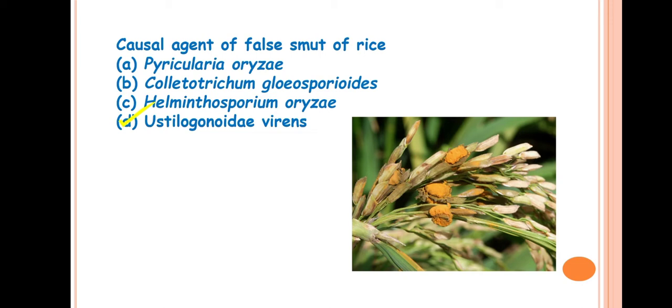Let's discuss the symptom of false smut of rice. Here, the individual grain will transform into a mass of yellow fruiting bodies or velvety spores. Here you can see the yellow fruiting bodies are there in the place of the grains. Few grains in a panicle are usually impacted by this fungus. Rest of the grains are in normal condition. Generally, false smut of rice occurs when the moisture condition or humidity condition is high during the grain filling stage. If heavy rain occurs during the grain filling stage or flowering stage, then this disease will mostly occur.